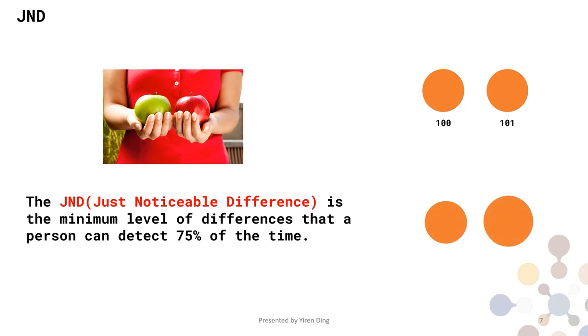How about this new pair? It is much easier to tell the right side circle is larger, because the radius difference is 10 pixels. So 10 pixels is noticeable difference. And how about this new pair? If you can tell the differences for the circles of this new pair, your JND is between 1 pixel and 5 pixels. And if not, your JND is between 5 pixels and 10 pixels.